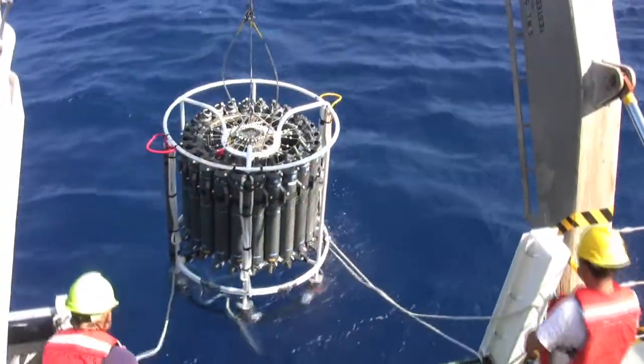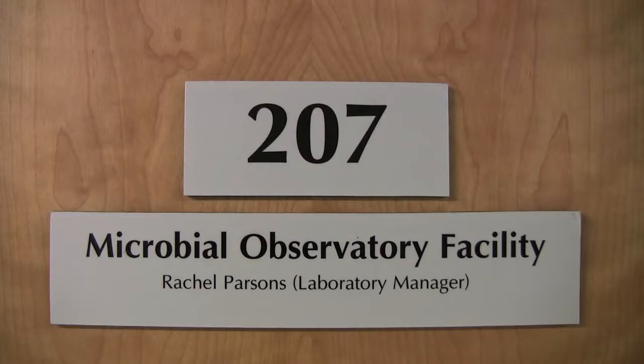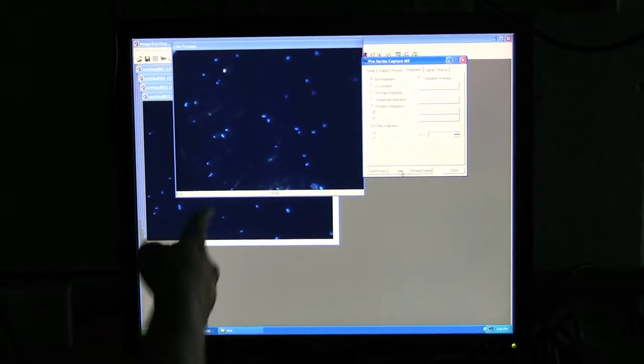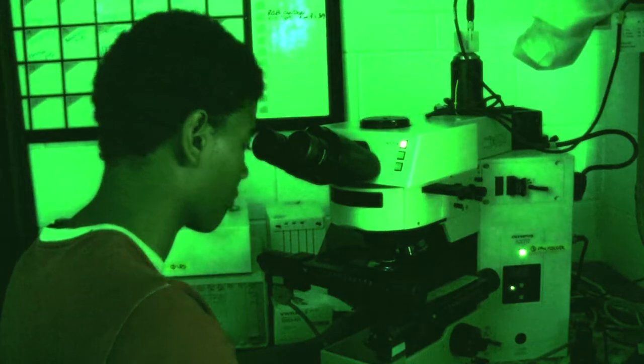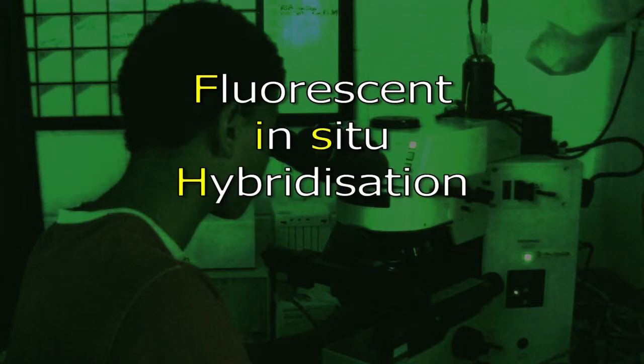We collect water samples off the ship using the Atlantic Explorer and the CTD. We take the samples and fix them, which basically means the bacteria are preserved. We then count the cells for viruses and bacteria, and we look at different bacterial communities using fluorescent in situ hybridization microscopy, which is a little complicated.